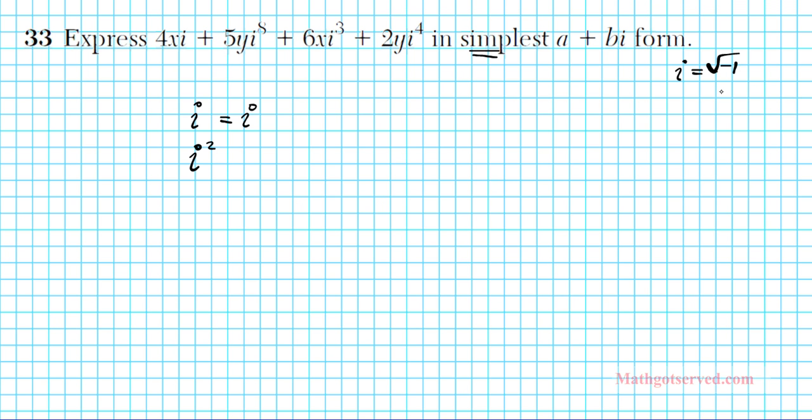Now you have i square. i square involves squaring the square root of negative 1. So if you square the square root of negative 1, you end up with negative 1, right? So i square reduces to negative 1. Remember, i can remain as i, but if your power goes higher than 1, then you have to reduce it. So i square reduces to negative 1. i to the third is just the product of these two.